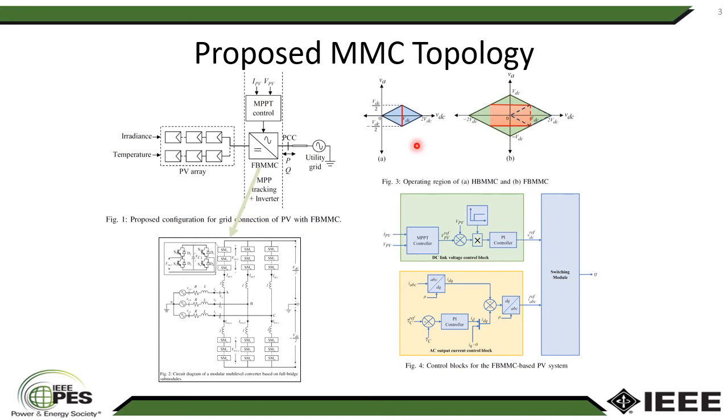Therefore, this HBMMC topology is unable to be used for grid integration of solar photovoltaic that demands variable voltage in the DC side to harness maximum power. So this flexibility is achieved using FBMMC as shown in the subfigure B.